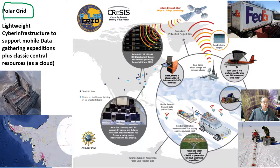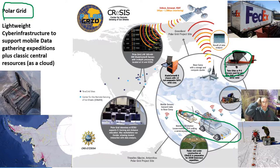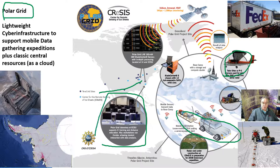Here's another example: PolarGrid, a collaboration between Indiana, Elizabeth City State, and Kansas. Data is taken by aircraft towing instruments that look down into the Earth searching for snow layers and glacier beds, going kilometers down. That data is then sent to PolarGrid sites in Indiana, Kansas, and Elizabeth City State. They build sleds in Kansas and ship everything by FedEx or UPS. This contributes to climate change studies by directly mapping the glaciers.